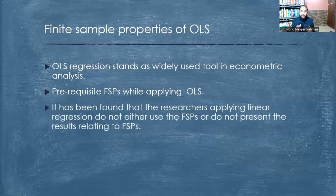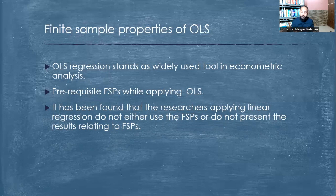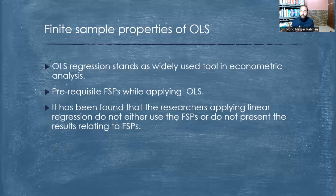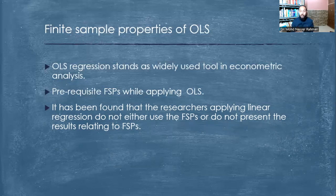Why are these finite sample properties important for regression analysis in econometrics? Several published research studies suggest that researchers have applied regression but ignored many of the finite sample properties. If finite sample properties are not followed, then the inferences drawn from the regression outcomes may be questionable. People applying linear regression generally do not justify the use of finite sample properties, but in econometrics there should always be explanation and justification of all finite sample properties.